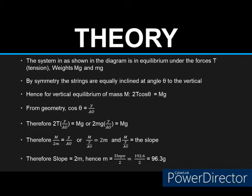Hence by symmetry, the strings are equally inclined at angle theta to the vertical. Therefore, for vertical equilibrium of mass M, which is the known mass, 2T cos theta is equal to Mg. And from geometry we can deduce that cos theta is equal to Y over AO. So if we put all this together, we can derive that capital M over 2 small letter m is equal to Y over AO.